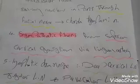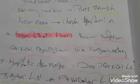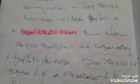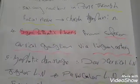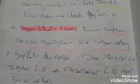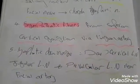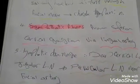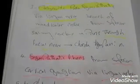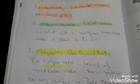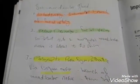The lymphatic drainage goes to the deep cervical lymph nodes, jugular lymph nodes, and pre-vascular lymph nodes near the facial artery. Subscribe to receive the next video about the sublingual gland.